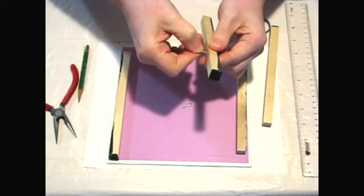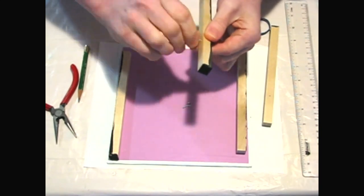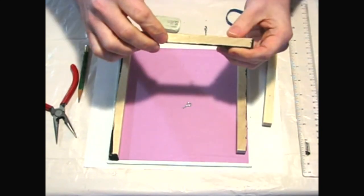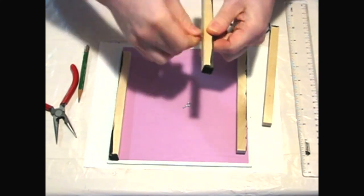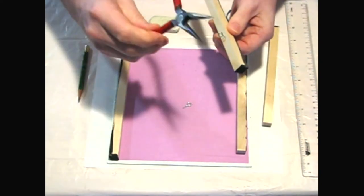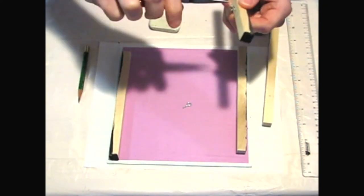As I'm screwing it in, I check to make sure the screw is going in straight in both directions. Since the wood is soft, I can screw the eye screw in with my fingers. But you can also use needle nose pliers to twist it in.